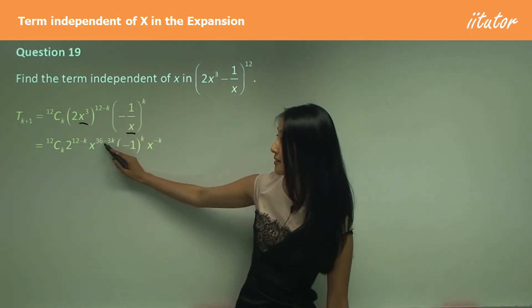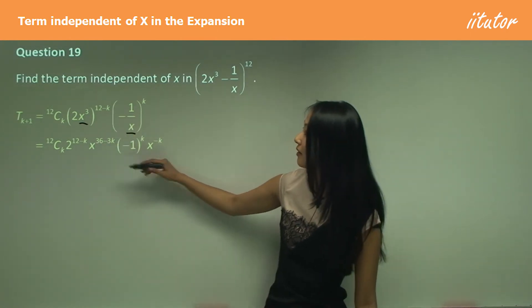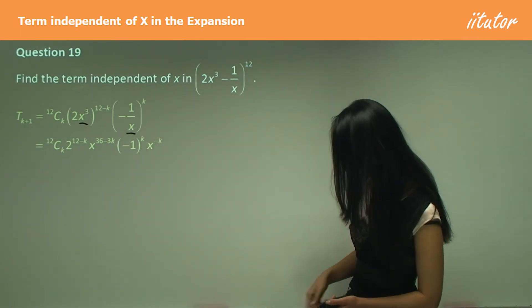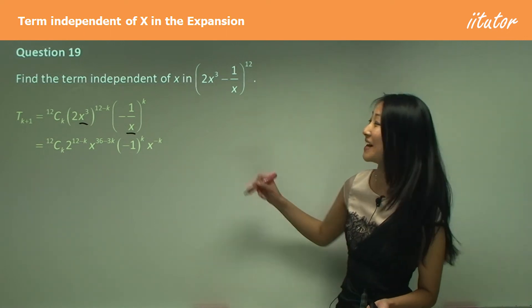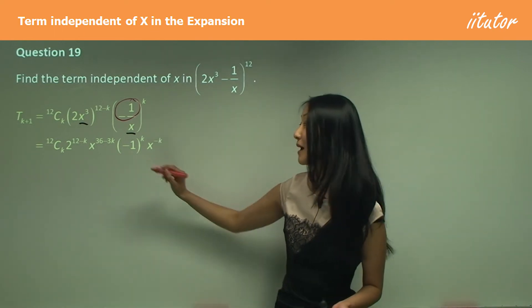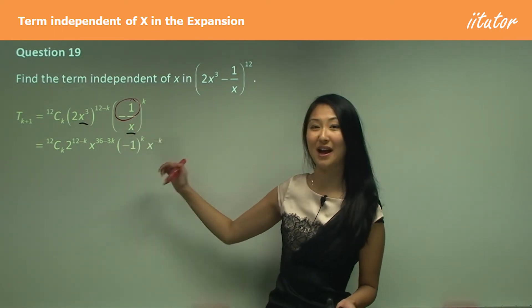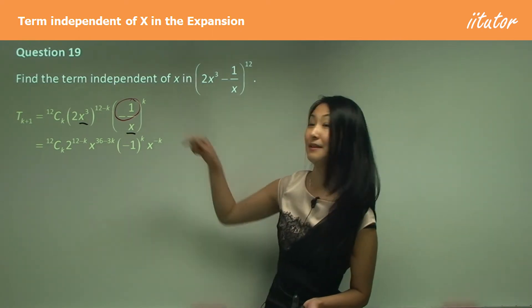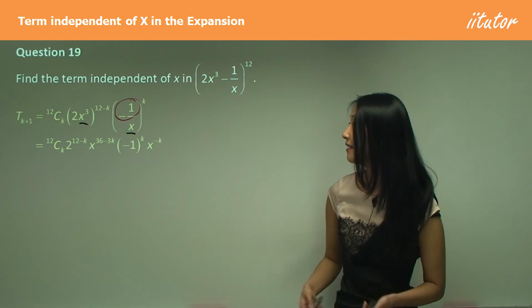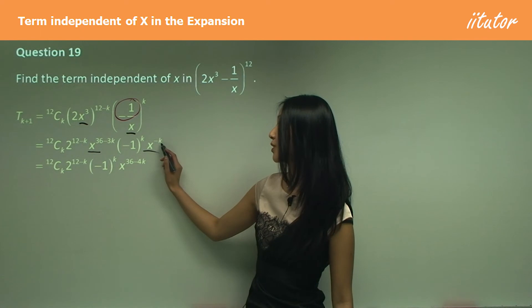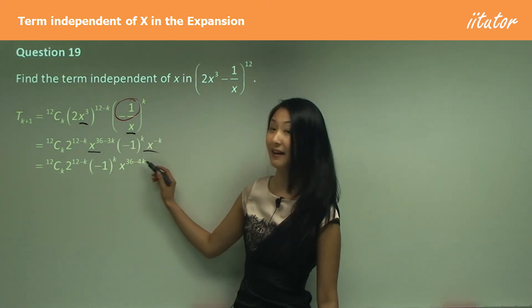This becomes 2^(12-k), and here we have x³ times that, so that becomes x^(36-3k). Here we have negative 1. Be really careful—a lot of students forget the negative because it's 1, but that's negative 1, so make sure you put brackets there. Then finally x^(-k). This and this are common, so subtract that k: you end up with 36 - 4k.